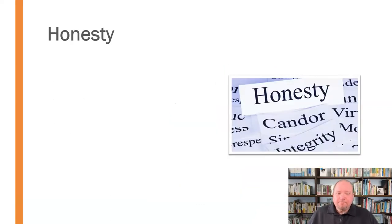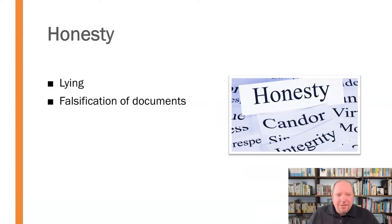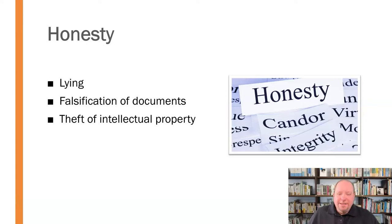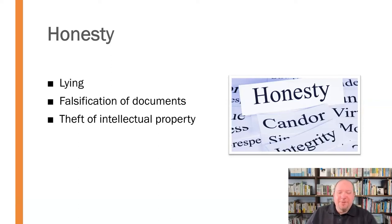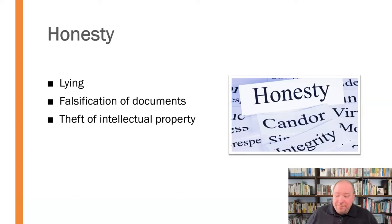Let's start with honesty. When we talk about honesty, we're talking about things like lying, falsification of documents, and theft of intellectual property. All of those things have to do with honesty — either by actively giving false information or even by omission. Dishonesty by omission is still dishonesty. If you say, well, I didn't lie, I didn't provide false information, so that's not really that bad — it can be, if you're still holding out on information. That's what we call deception by omission, and it's really the same thing.